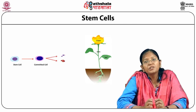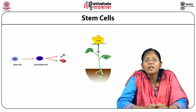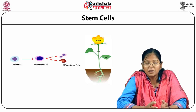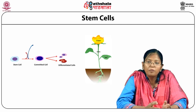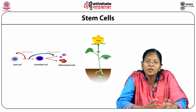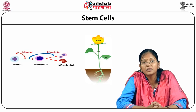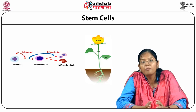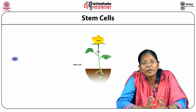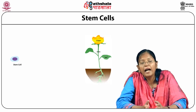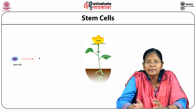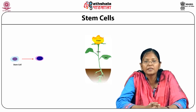Stem cells, on the basis of properties, have two important characteristics. One is self-renewal capacity — that is, to make a similar copy of the previous cell. The second important property is differentiation — that is, to divide and make a mature specialized lineage of differentiated cells.